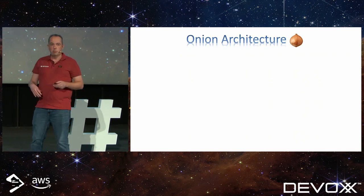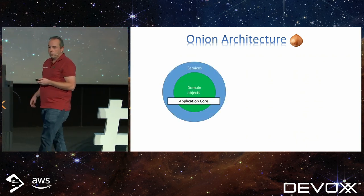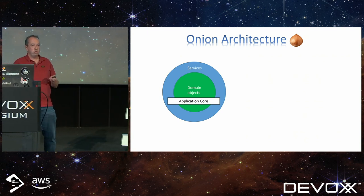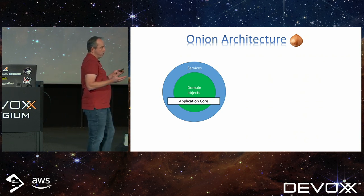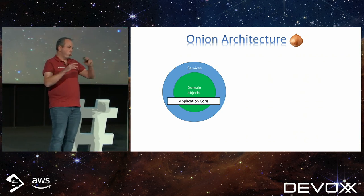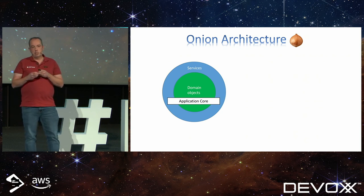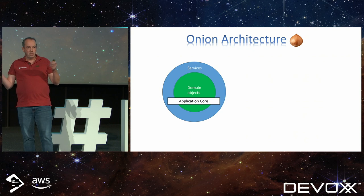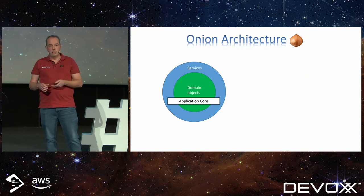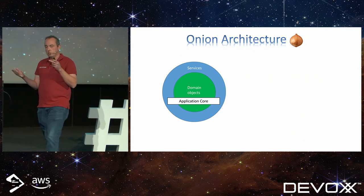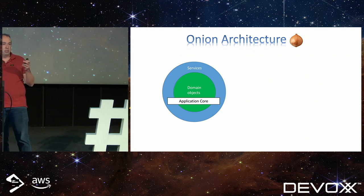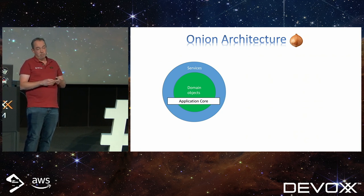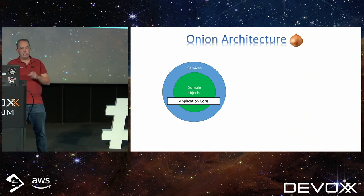The idea is that you make a layer structure of your application. You start with your application core. That contains the domain objects, sometimes called entities, and then some services to orchestrate things around those domain objects. But you also have your logic that you want to access — either by some external reference — so you need something to access this ball of business logic. And this ball of business logic might need some persistency or some external service to get data from.